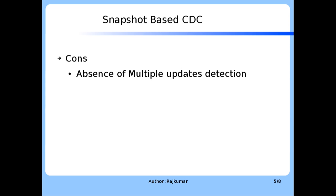Cons: absence of multiple updates detection. This snapshot-based technique has one of the cons which we discussed in the previous timestamp-based technique, and that is multiple updates detection. To provide a recap, multiple updates detection is a feature to identify each update that has occurred on a record between successive incremental fetches, and this capability is not possible to be met as part of this snapshot-based technique.